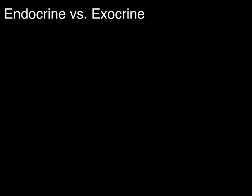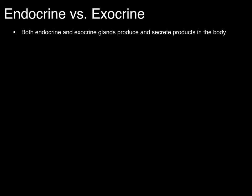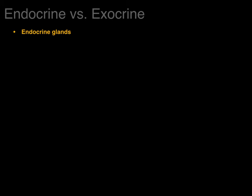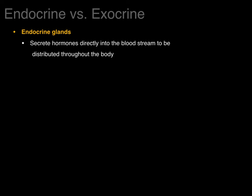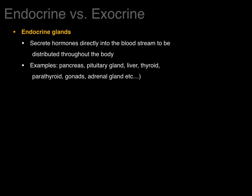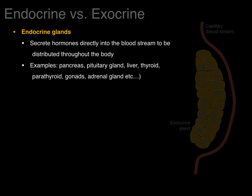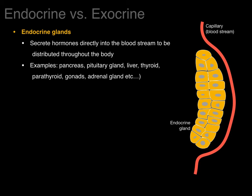What is the difference between endocrine versus exocrine glands? Both endocrine and exocrine glands produce and secrete products in the body. Endocrine glands secrete hormones directly into the bloodstream to be distributed throughout the body — examples are the pancreas and adrenal gland. The endocrine gland produces a hormone, secretes it into the interstitial space, which is then brought into a capillary and distributed throughout the body.